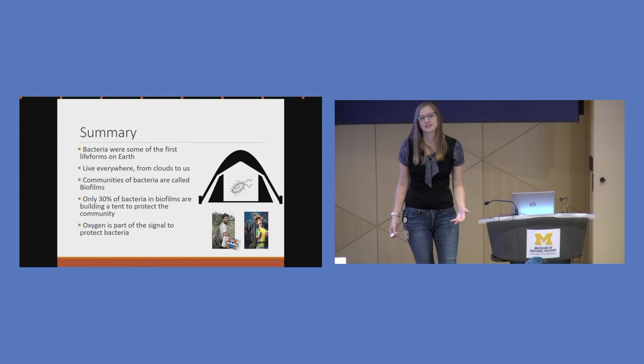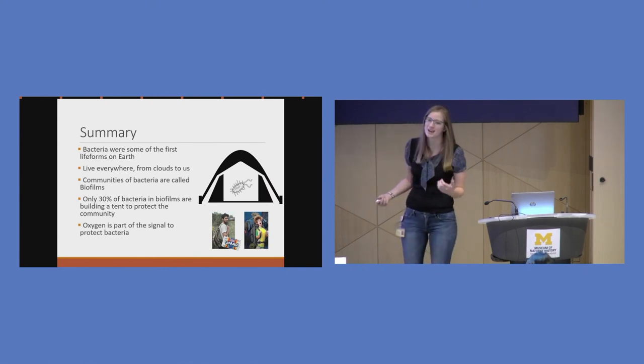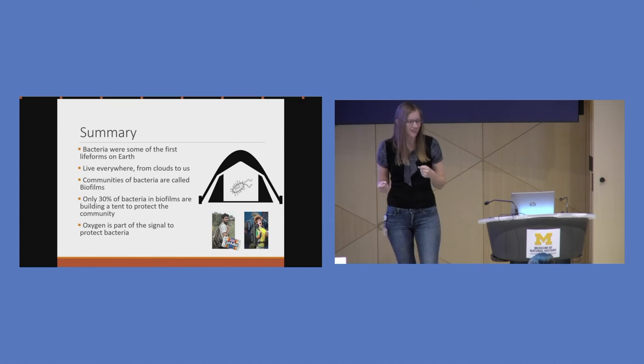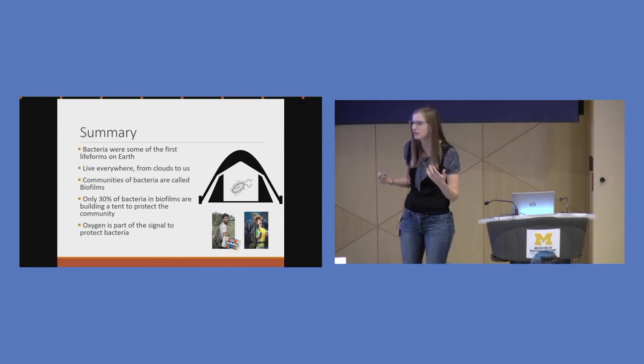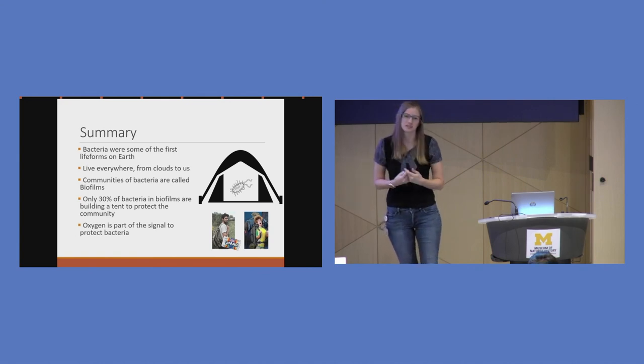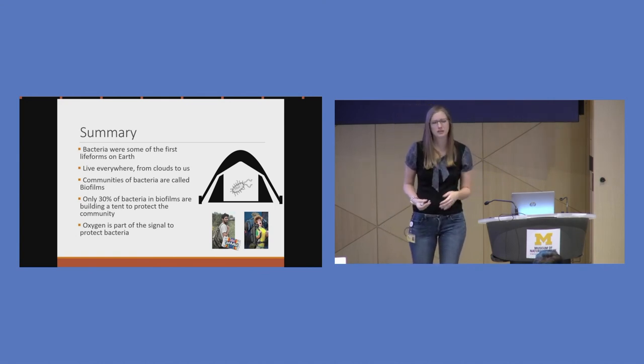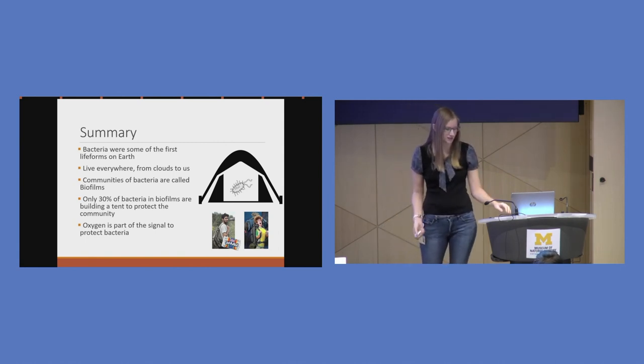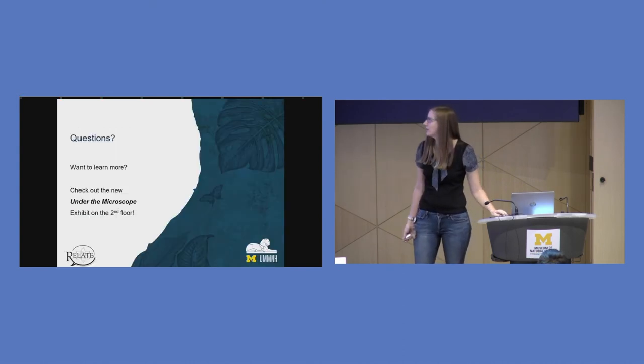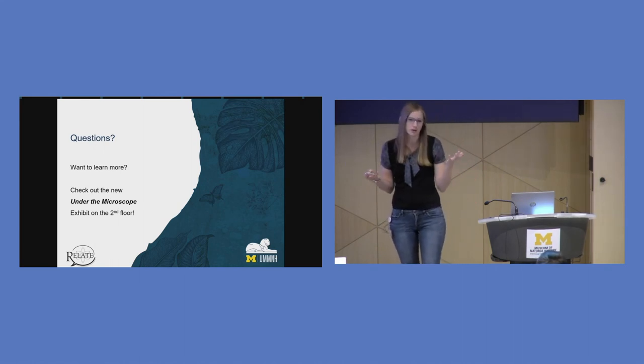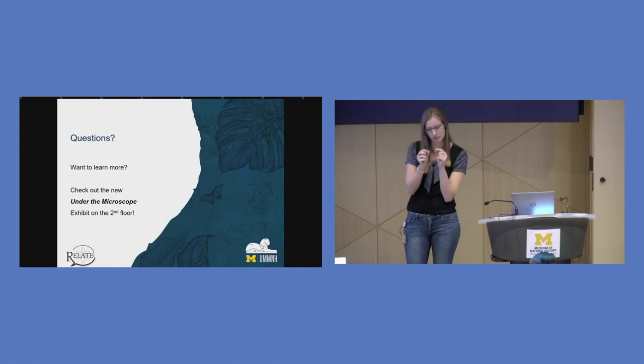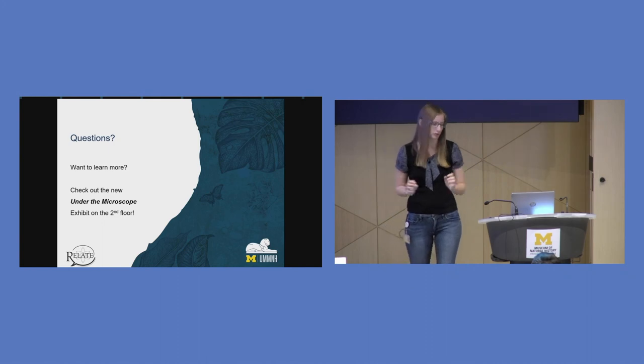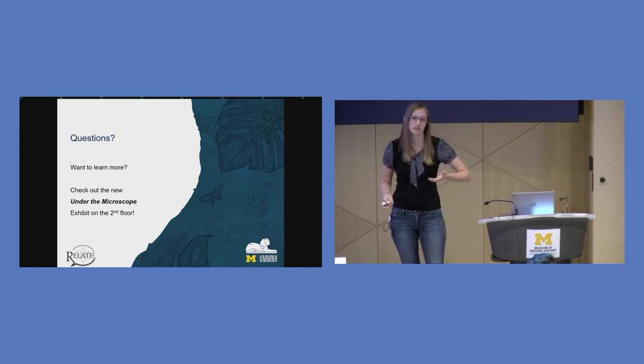So hopefully today I've told you a little bit about our bacteria friends. They were the first life forms here on earth, and they live everywhere from the sky and the volcanoes to us. And the communities of bacteria that we see every day are called biofilms. And only about 30% of the bacteria in those biofilms are making the tent structures they need to protect everybody in the community. And oxygen is part of that signal. If you want to learn more about microbes and anything that's the size of microbes that we can't see without the aid of a microscope, the new exhibit is on the second floor and is beautiful. But I'd love to take any questions about research or bacteria.